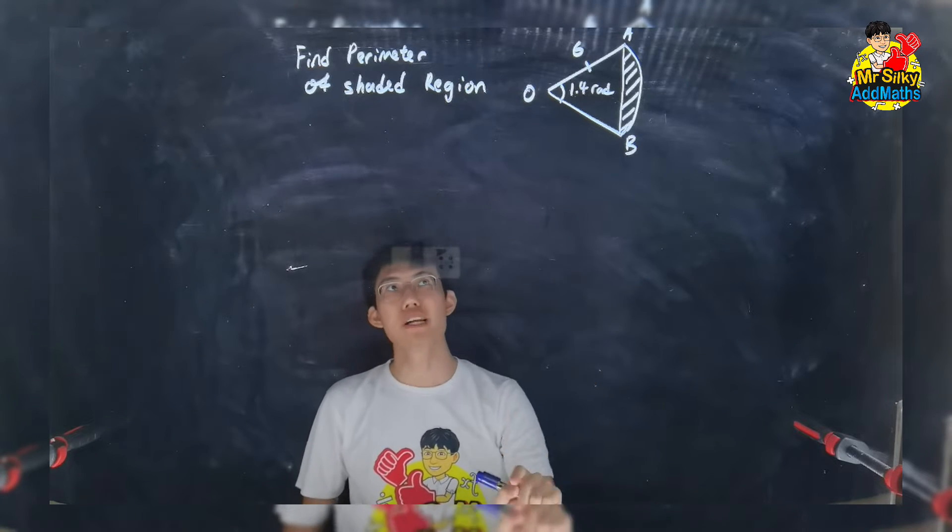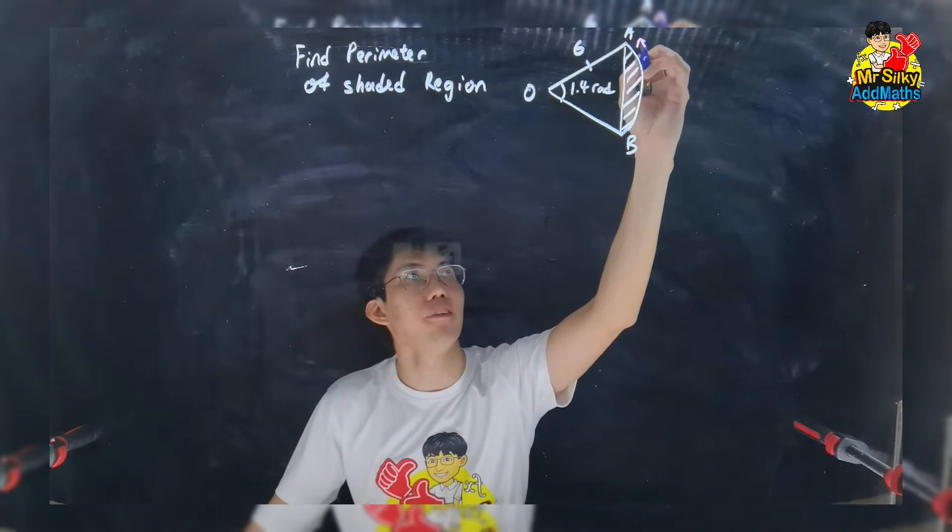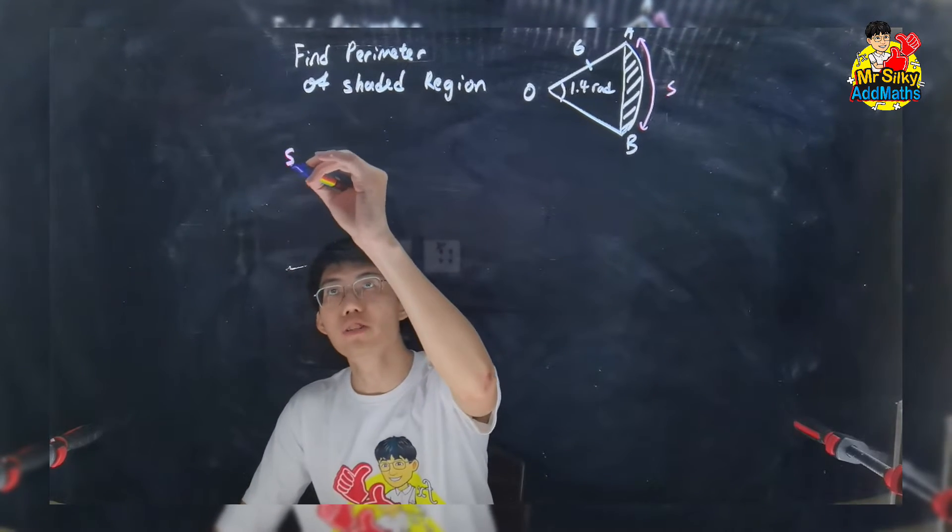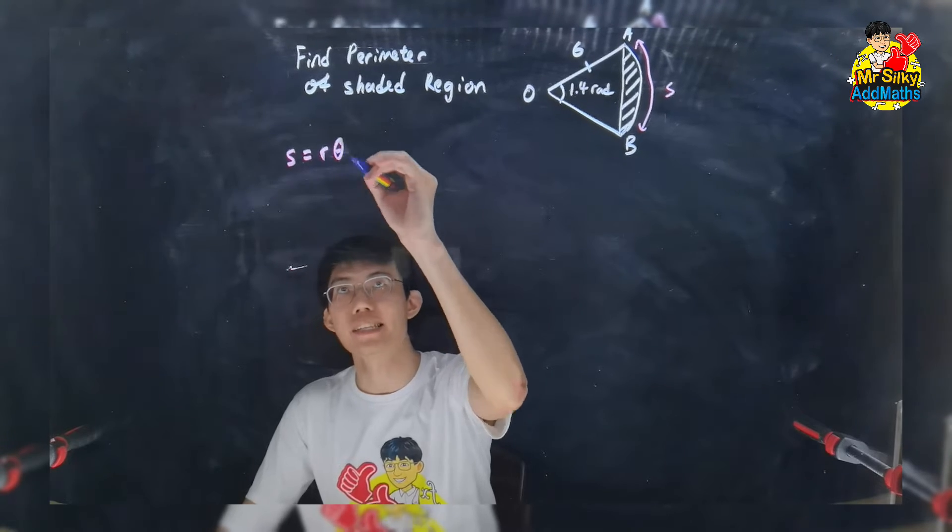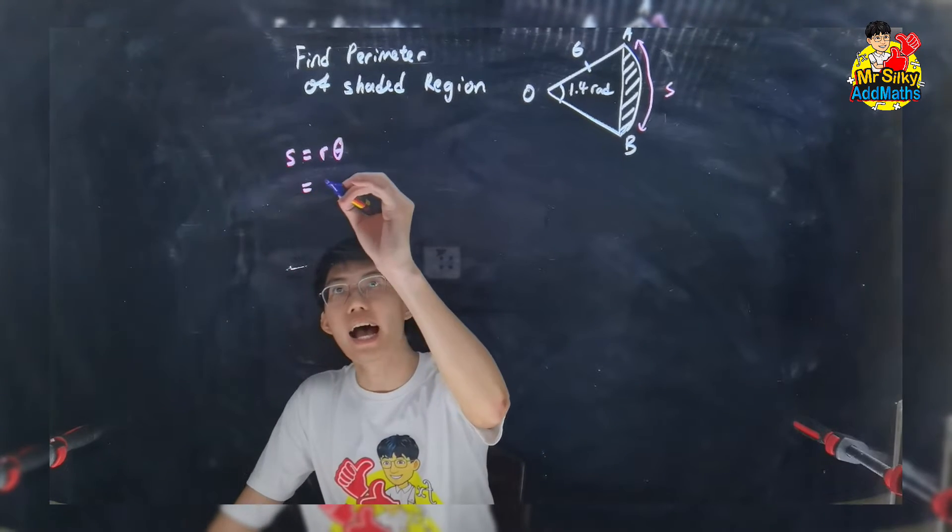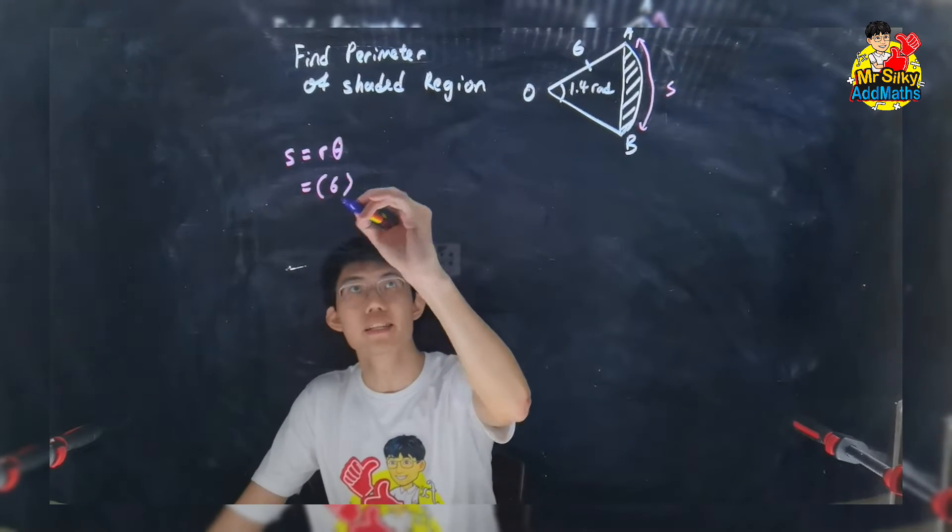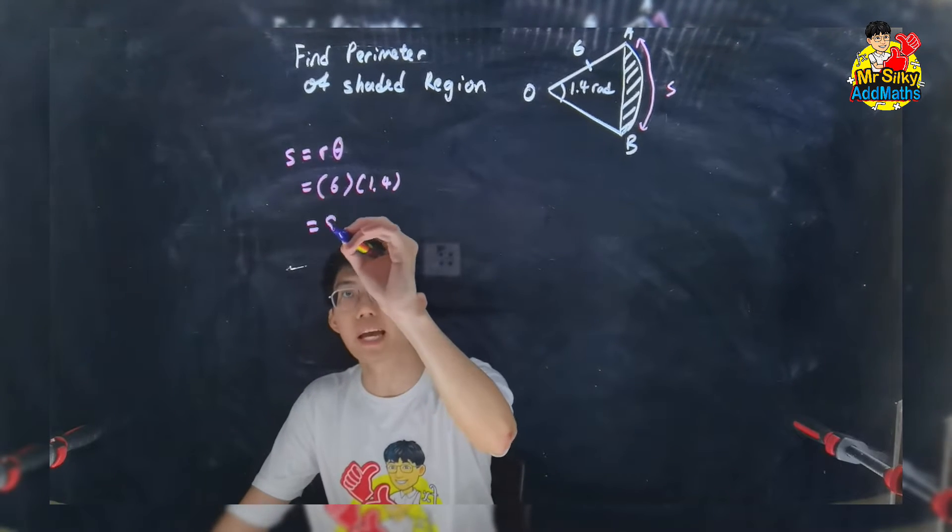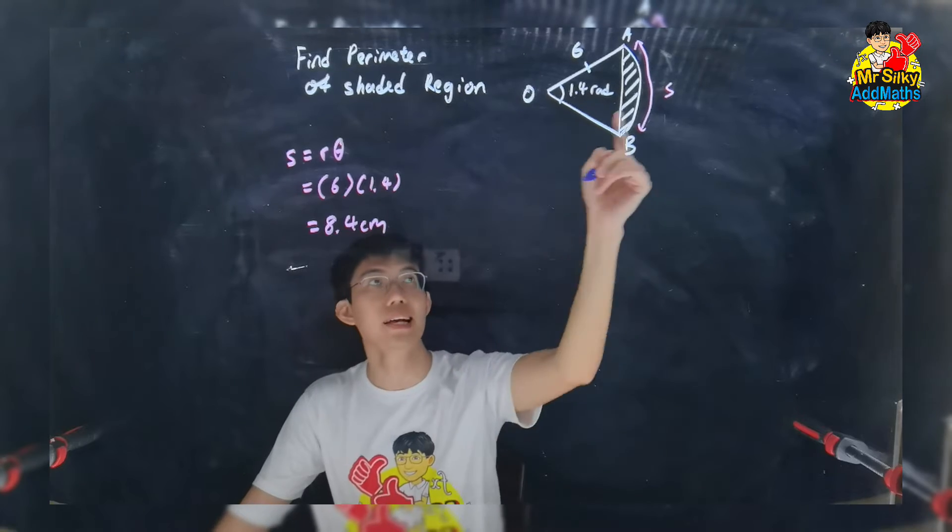As I can see here, if I want to find the perimeter, first of all, let's find out what it is, which we call the arc. So in order to find the arc, it is always s equal to r theta. And the arc radius is 6, the theta is 1.4. So basically, we get 8.4 cm. That's for the arc.